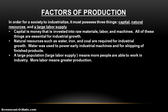For a society to become industrialized, it has to possess at least these three things: a society must have capital, natural resources available to them, and a large labor supply. And you have to have all three — you can't have access to only one or two. You have to have access to capital, natural resources, and a labor supply if you want to become industrialized.